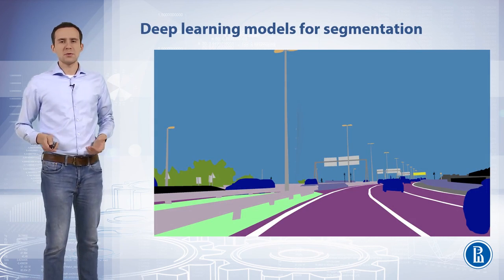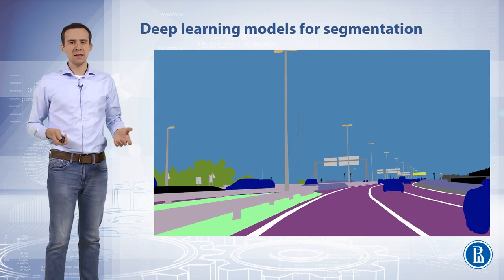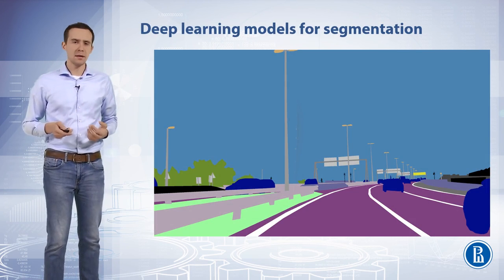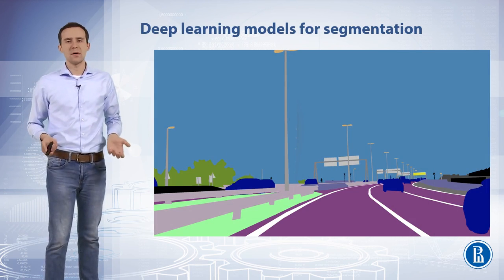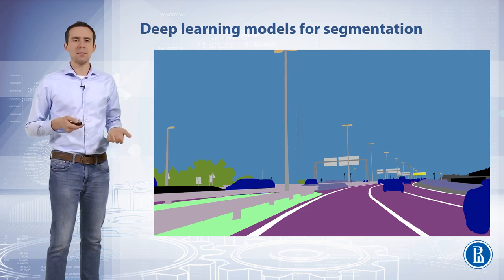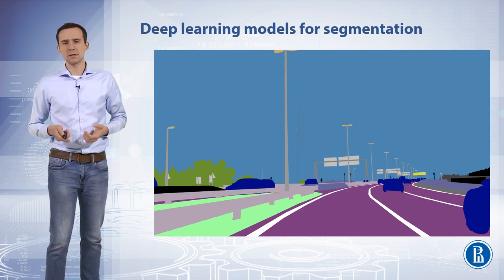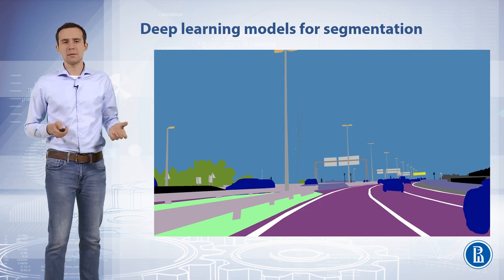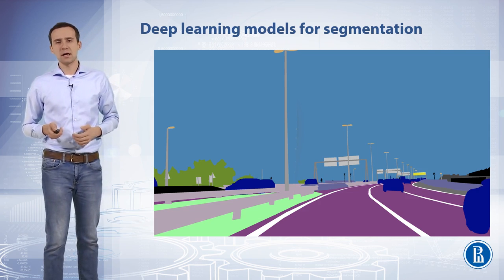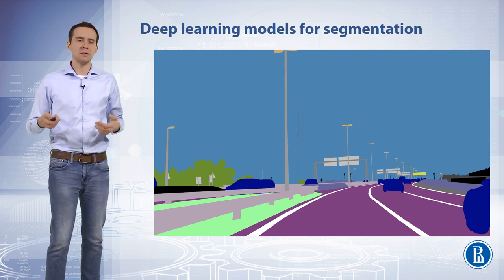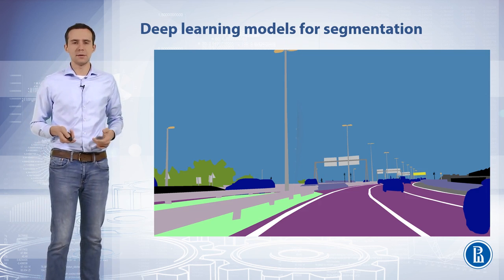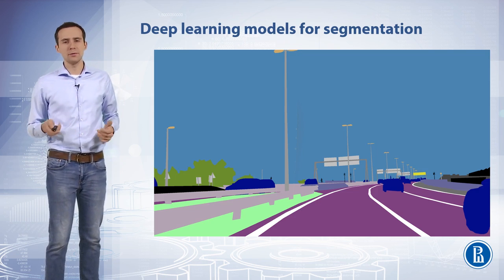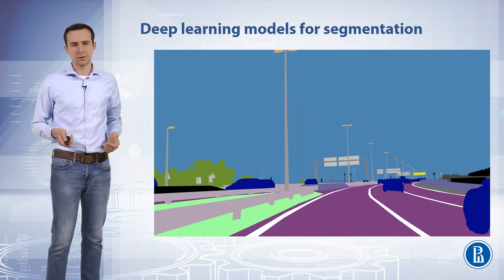Semantic segmentation with convolutional neural networks effectively means classifying each pixel in the image. The idea is to create a map of all detected object areas in the image — basically, the output image where every pixel has a label associated with it. In this chapter we're going to learn how convolutional neural networks can do that job for us.